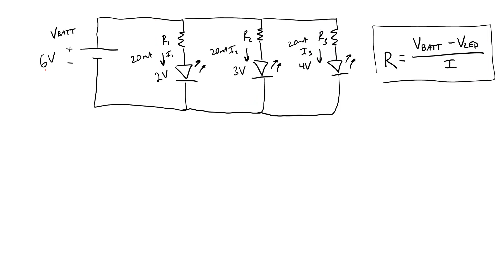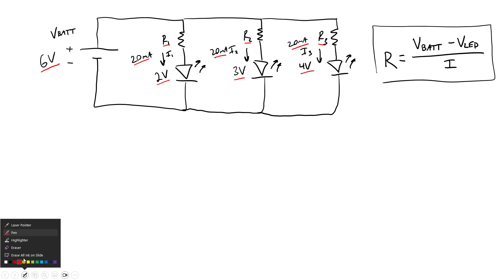Let's go through an example with some numbers. We have a six volt battery and three LEDs each with a rated current of 20 milliamps, but with different colors, so we have different voltage drops. For example: a red LED with a voltage drop of two volts, a blue LED with a voltage drop of four volts, and a third LED at three volts — a color somewhere in between. We want to solve for the three resistor values to get 20 milliamps through each LED.